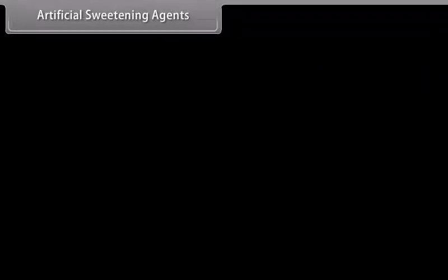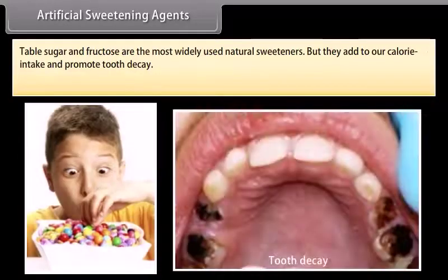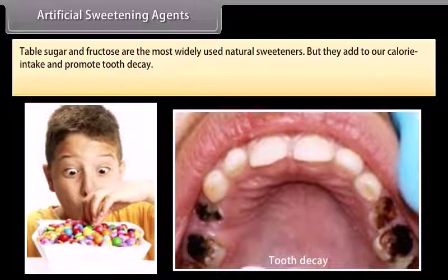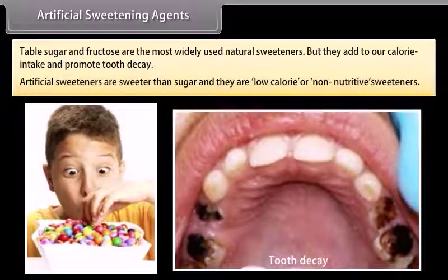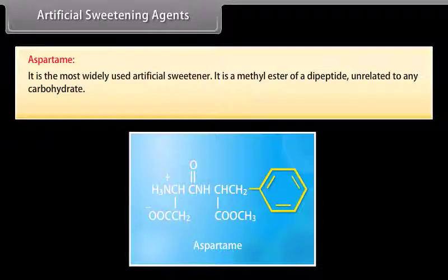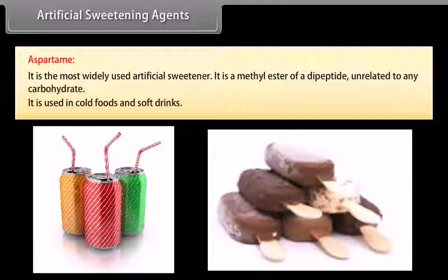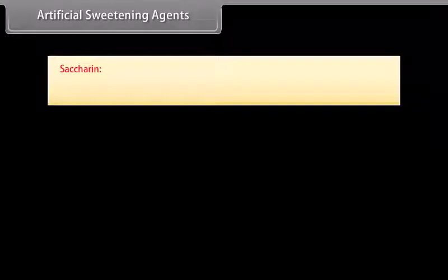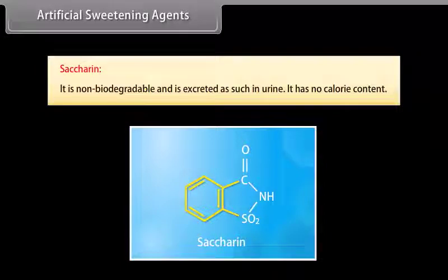Artificial sweetening agents: sweetness is a matter of taste, but almost everyone has a craving for sweets. Table sugar and fructose are the most widely used natural sweeteners, but they add to our calorie intake and promote tooth decay. Artificial sweeteners are sweeter than sugar and are low-calorie or non-nutritive. Aspartame is the most widely used artificial sweetener; it is a methyl ester of a dipeptide unrelated to any carbohydrate and is used in cold foods and soft drinks. Saccharin is non-biodegradable, excreted as such in urine, has no calorie content, and has proved to be a lifesaver for countless diabetics.